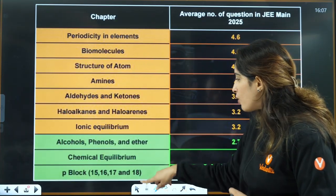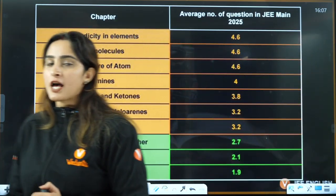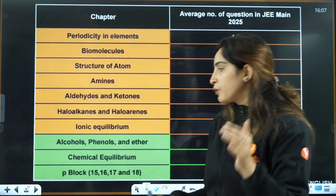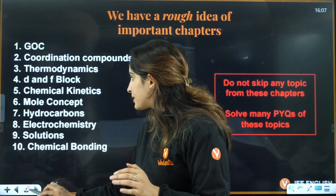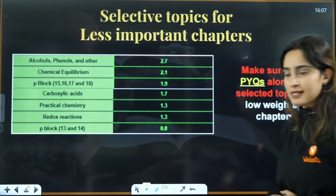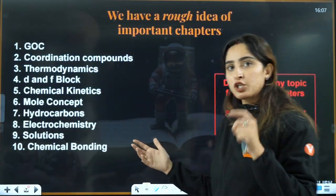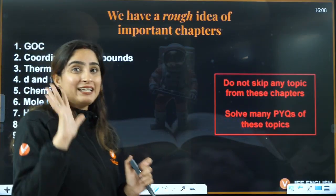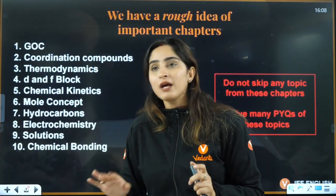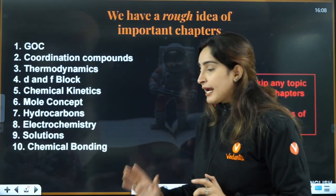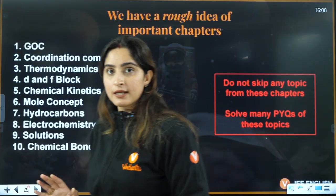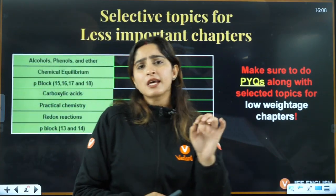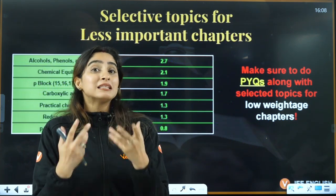Now for low priority chapters — I still would not advise you to skip them entirely. I'll give you specific topics to do from the low priority chapters as well. If you want to score 90–95 marks, do high priority chapters in detail along with previous year questions. For low priority chapters, at minimum do the previous year questions.